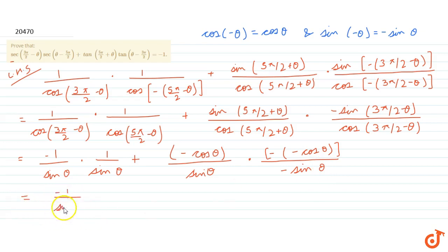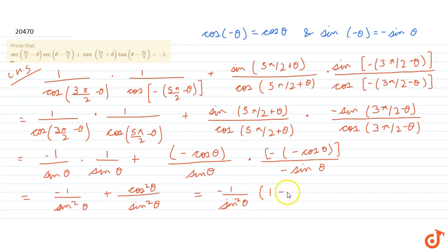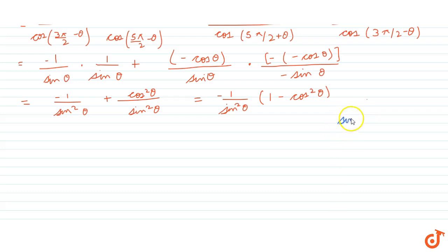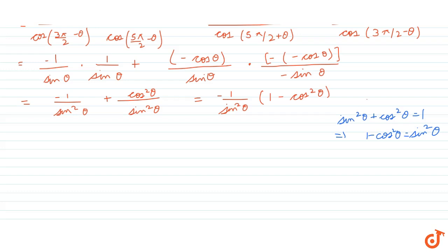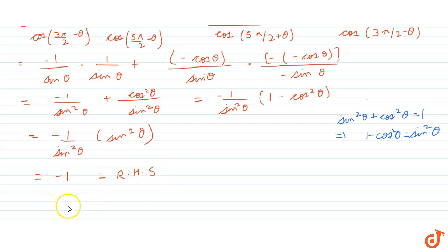This simplifies to minus 1 by sin²θ plus cos²θ by sin²θ, which equals minus 1 by sin²θ taking out common terms, leaving 1 minus cos²θ. Using the identity sin²θ + cos²θ = 1, we get 1 minus cos²θ equals sin²θ. Therefore the expression becomes minus 1 by sin²θ multiplied by sin²θ, which equals minus 1 — our right hand side. This is what we needed to prove.